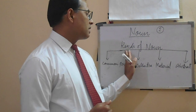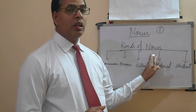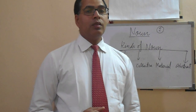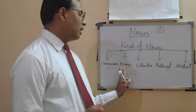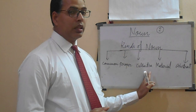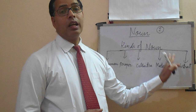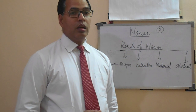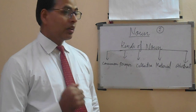We are moving towards the kinds of noun. There are five kinds of noun: common noun, proper noun, collective noun, material noun, and abstract noun. We are going to explain each one by one.